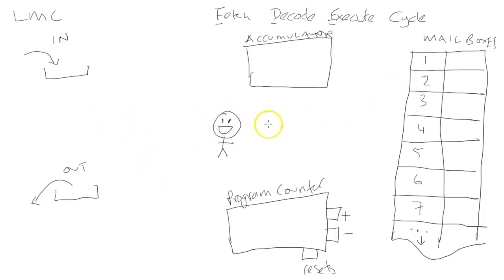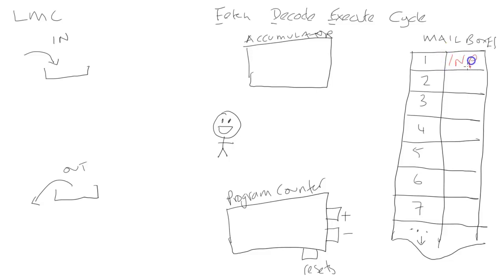The man's job is to go to the program counter, find the mailbox it points to, fetch an instruction or piece of data, and do something with it. Let's write some instructions into the mailboxes for a program that adds two numbers together. The instructions will be: input, store, input, add, out, and halt.